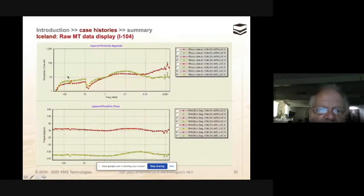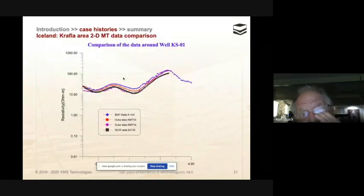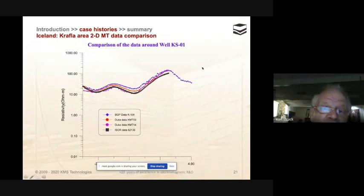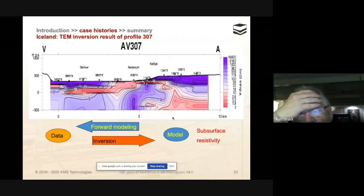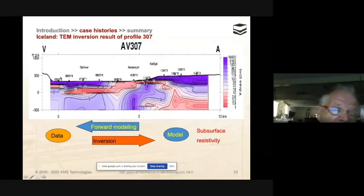We used multiple systems there. Here are the three systems compared at the beginning of the survey in x-y and y-x direction, to see that the systems gave consistent results and we could maintain the calibration. This is the raw data display. This is the x-y and y-x component of site number I-104. This is the data around the well. There were several different data sets recorded with different systems and different equipment of different universities, and they all gave pretty much very similar results.